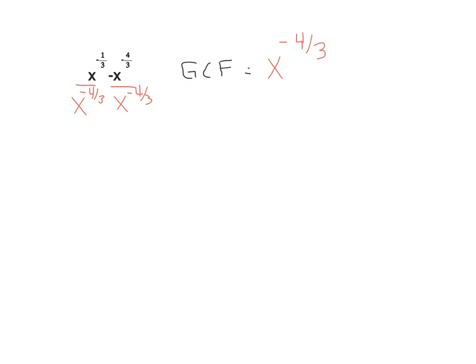And that x to the negative four-thirds is going to come down in the result in front, and then what we'll have to do is figure out what would be left inside as a result of that action.